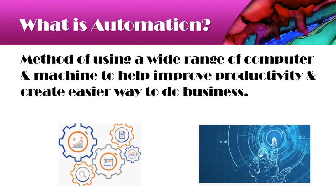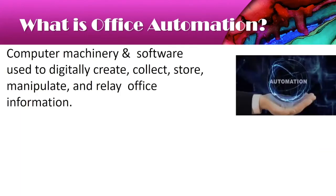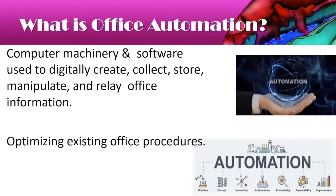What do we exactly mean when we say office automation? Office automation refers to various computers, machinery, and software which is used to digitally create, collect, store, manipulate, and relay the office information needed by people to accomplish various tasks. Office automation helps in optimizing or automating existing office procedures. We undertake automation to improve how we are doing business today — to improve efficiency, timing, and more.